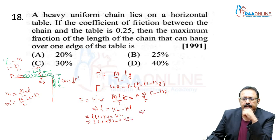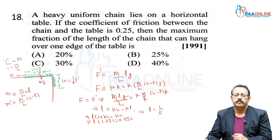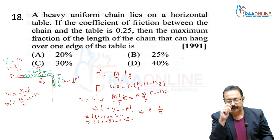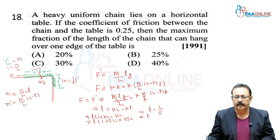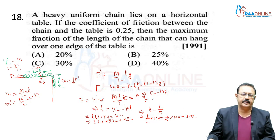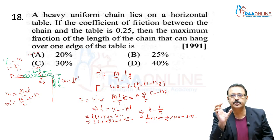So l = L/5, meaning one-fifth of the chain, or 20%, can hang over the edge. Up to that point, friction can stop the motion; beyond that it is not possible.